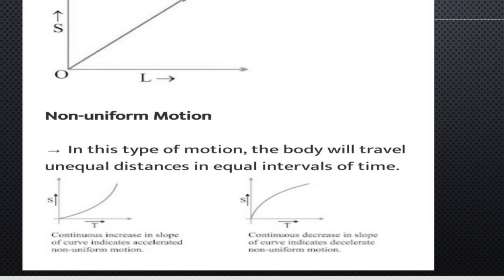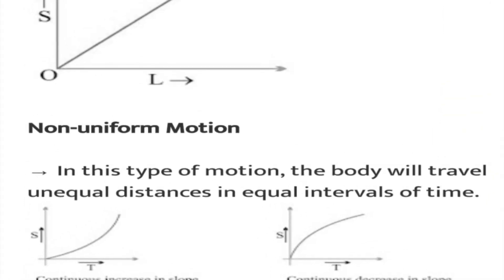Non-uniform motion is when a body covers unequal distances in equal intervals of time. Now you can see the graph. Uniform motion means constant motion — this gives a straight-line graph, where speed varies with distance.